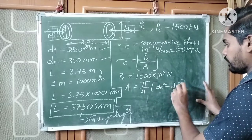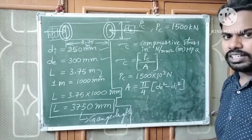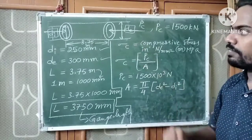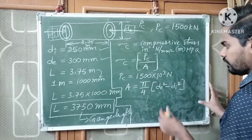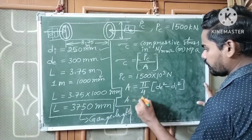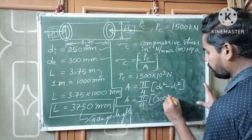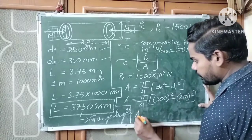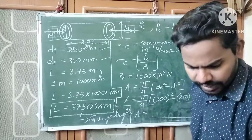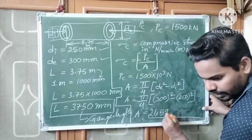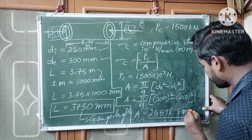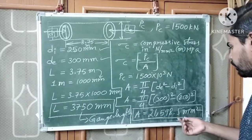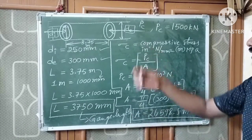Substituting the values: A = (π/4) × (300² − 250²). Calculating this gives A = 21598.5 mm². This is the cross-sectional area of the hollow circular column.